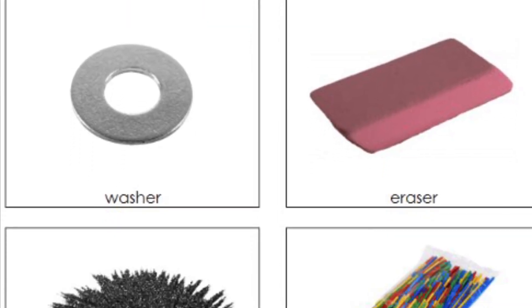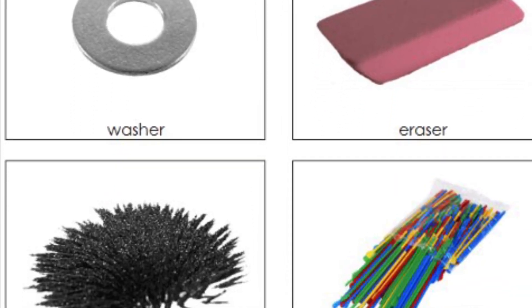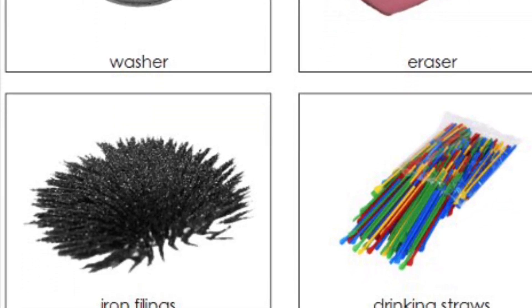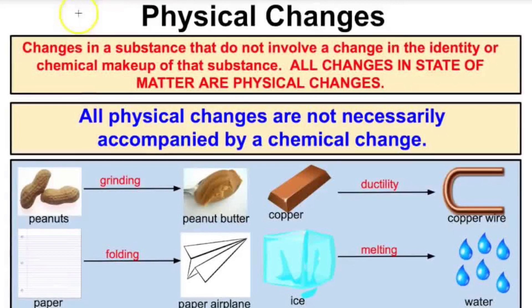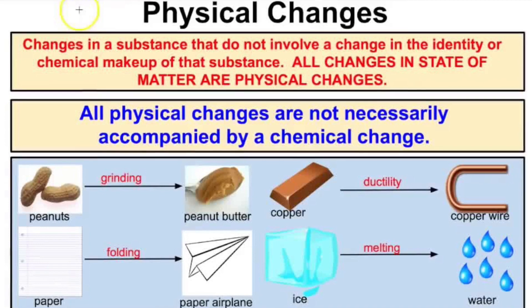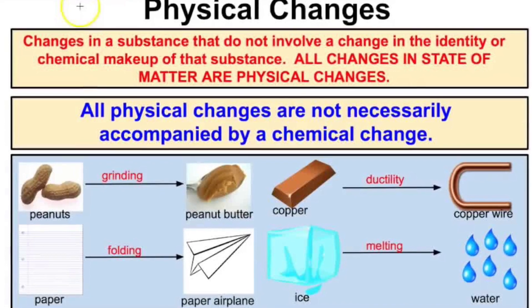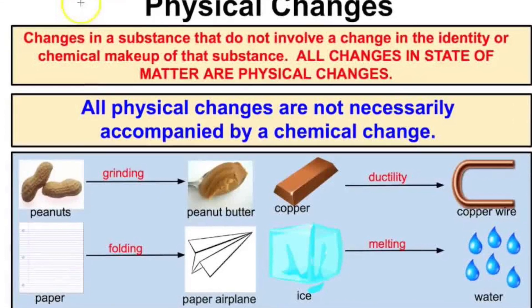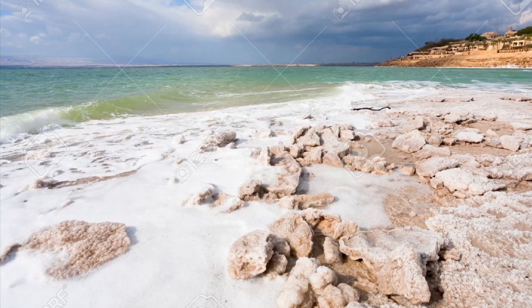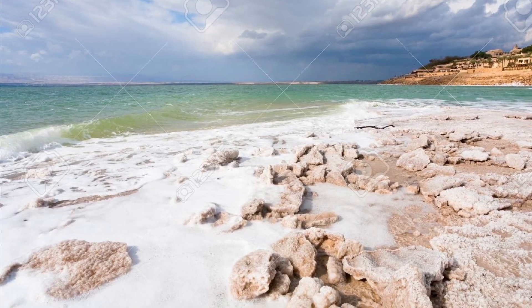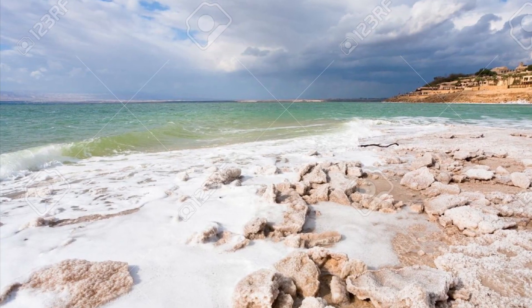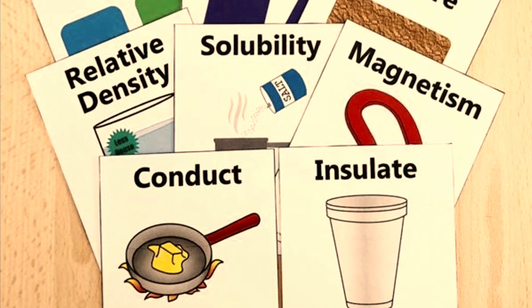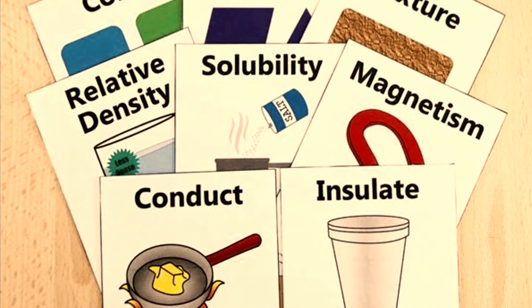Magnetism acts on metals like iron, attracting objects to its field. Physical changes can occur without new matter being formed — for example, salt dissolves in ocean water, then dries up on the shore.